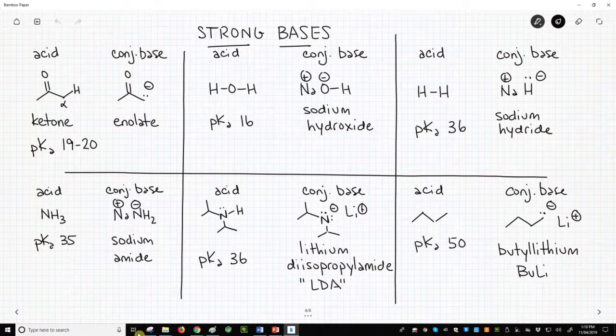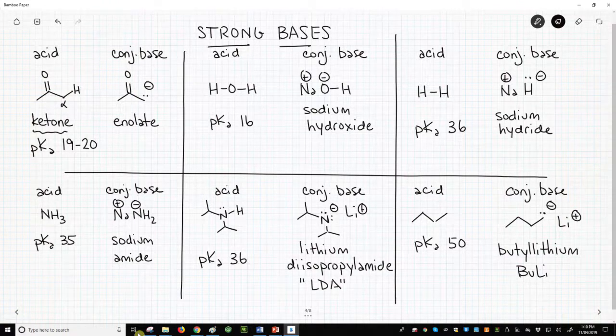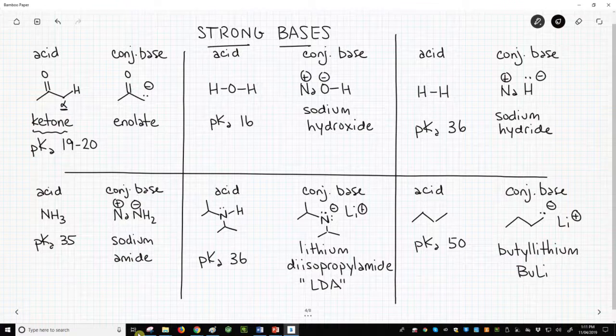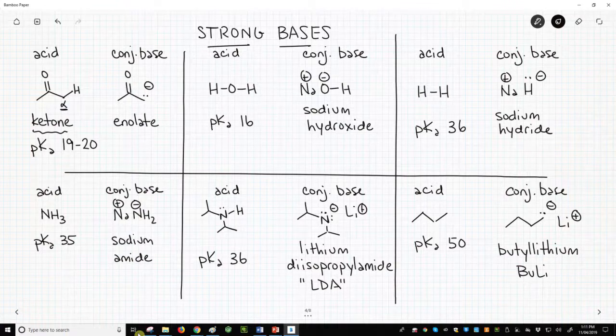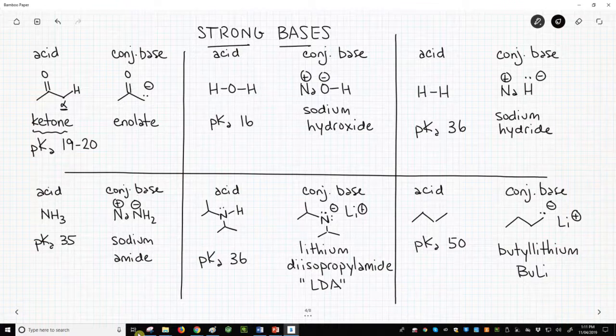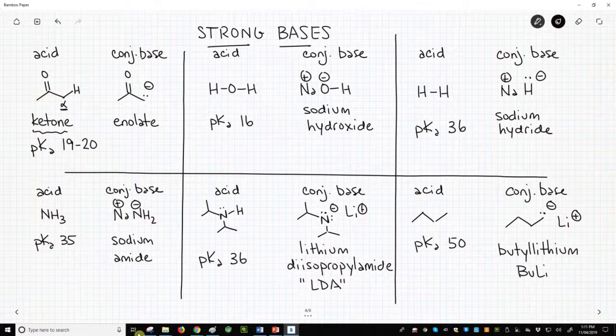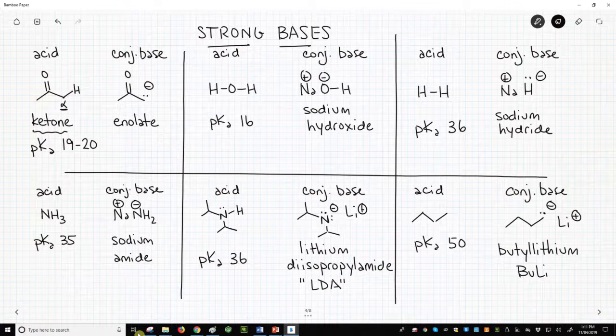In the top left, we have a ketone which is weakly acidic at the alpha carbon. It is our acid with a pKa close to 20. The conjugate base is the enolate. So if we want to deprotonate a ketone with an equilibrium that favors the enolate, we need to use a conjugate base of an acid that has a pKa higher than 20.